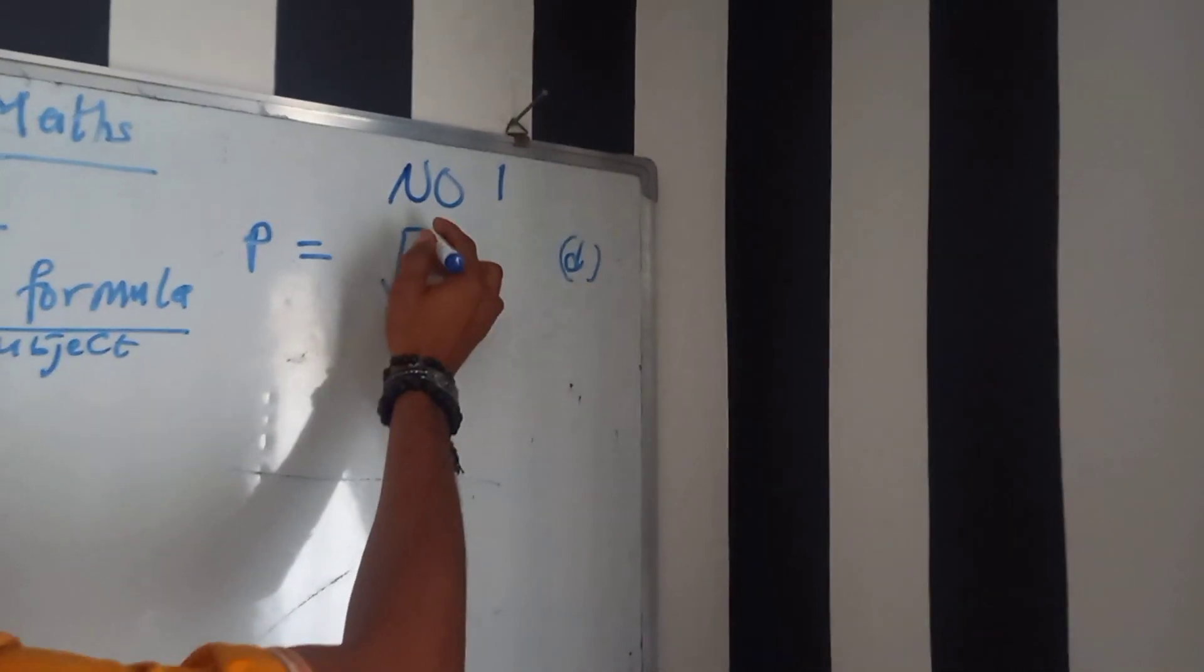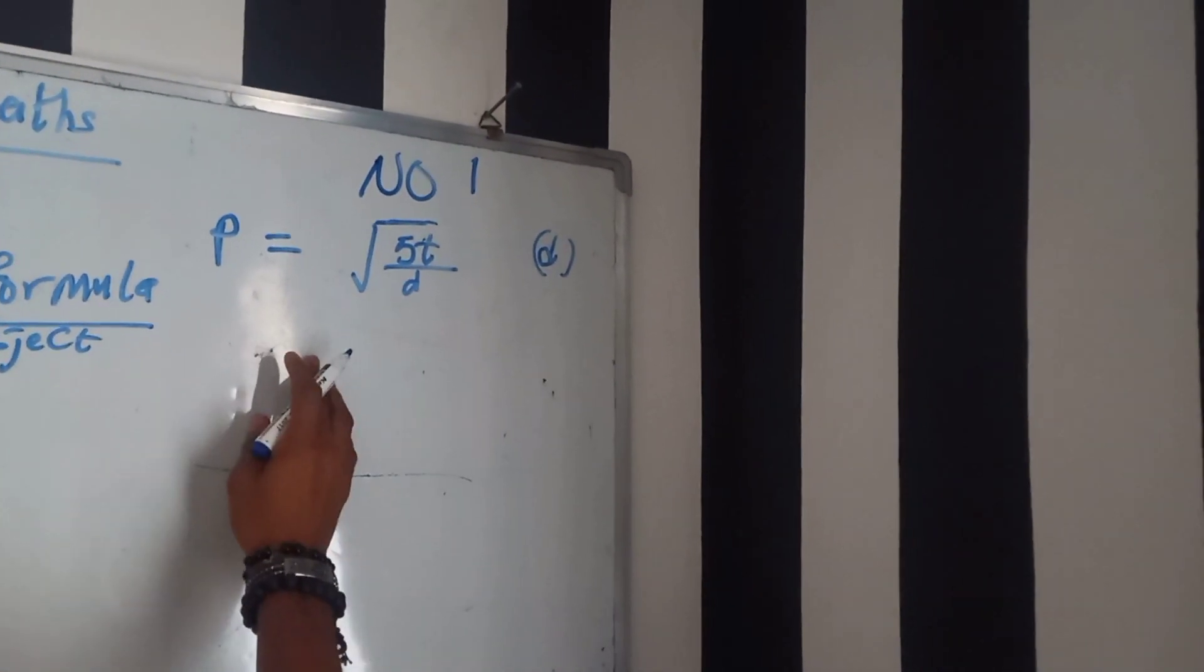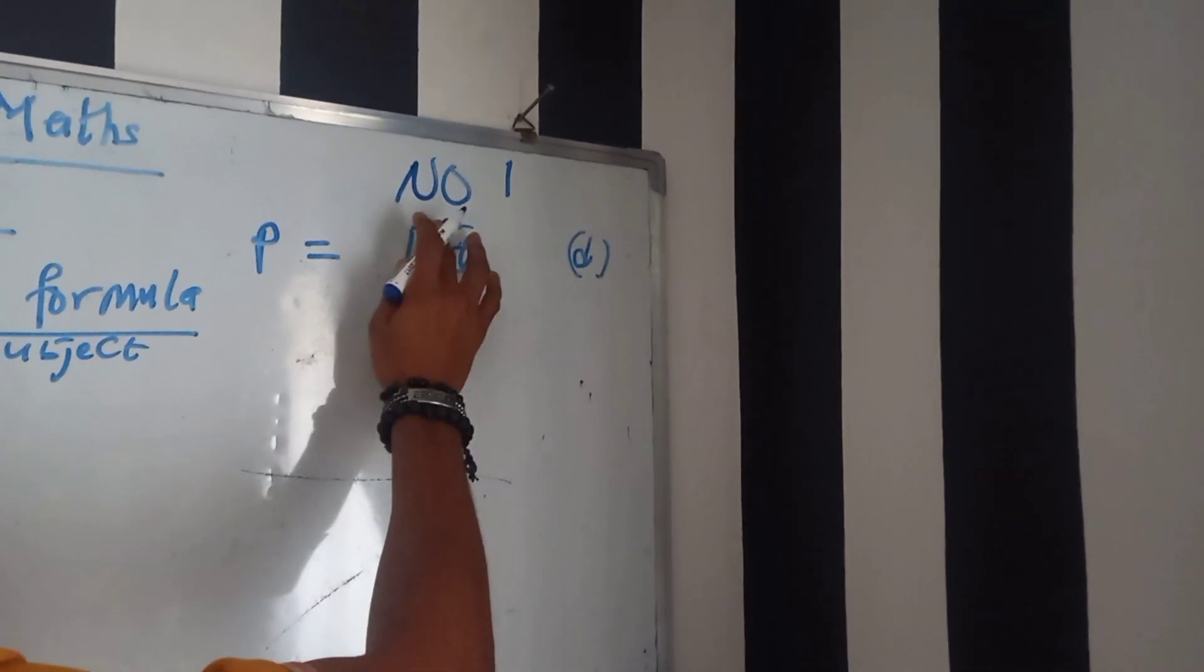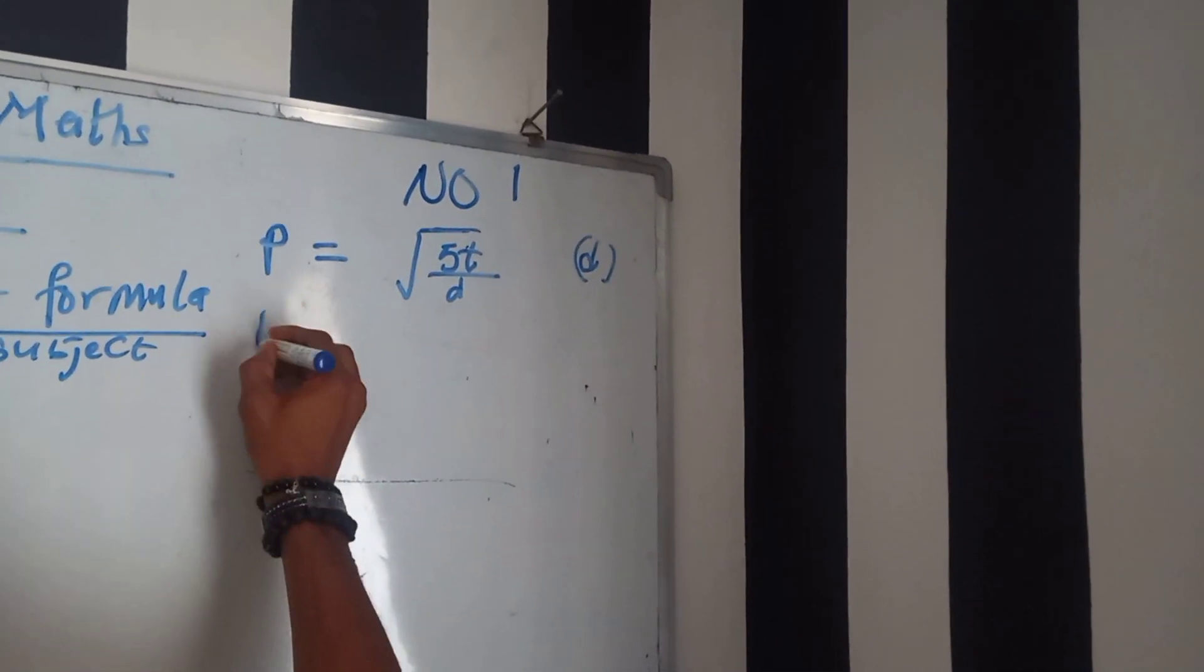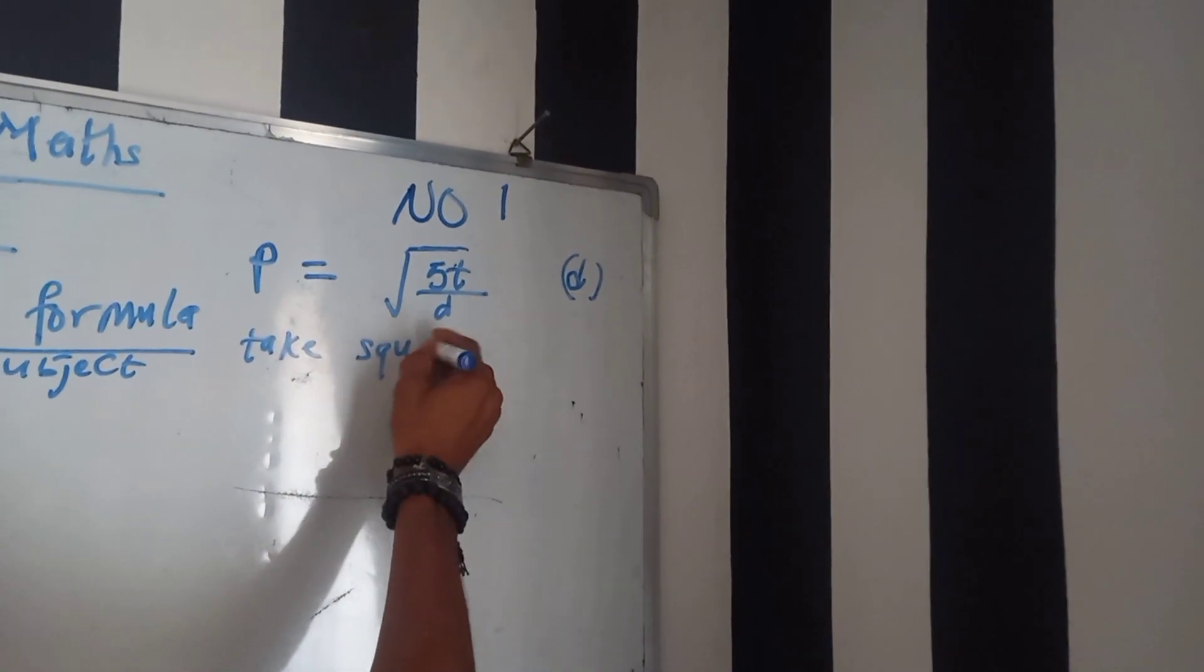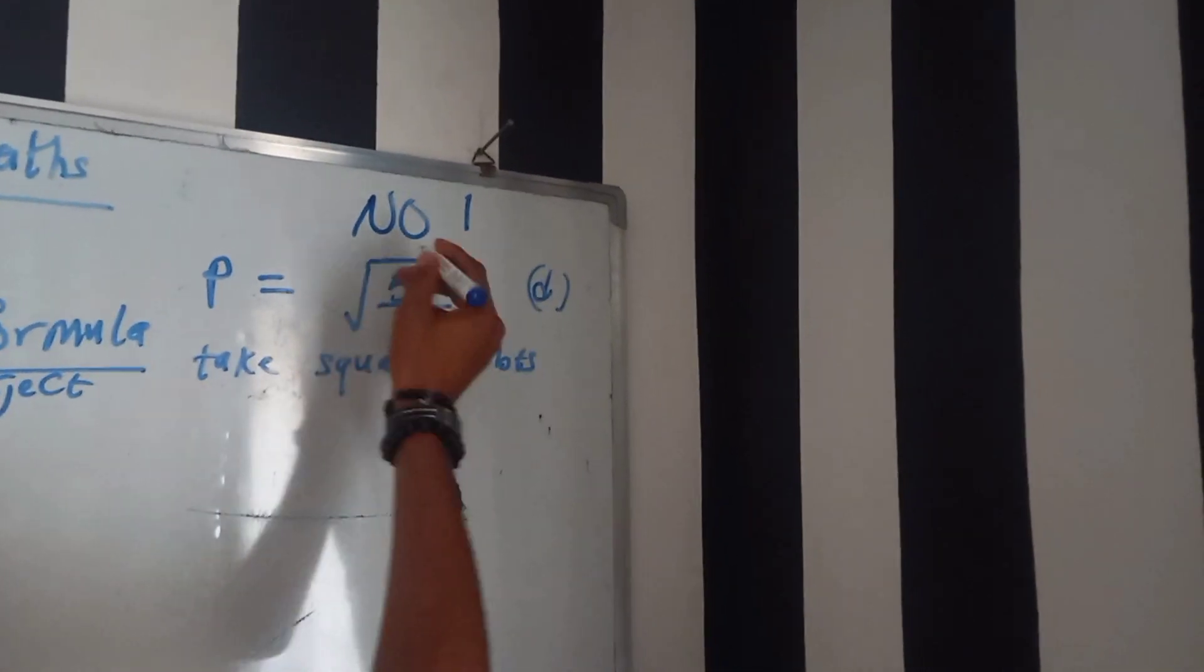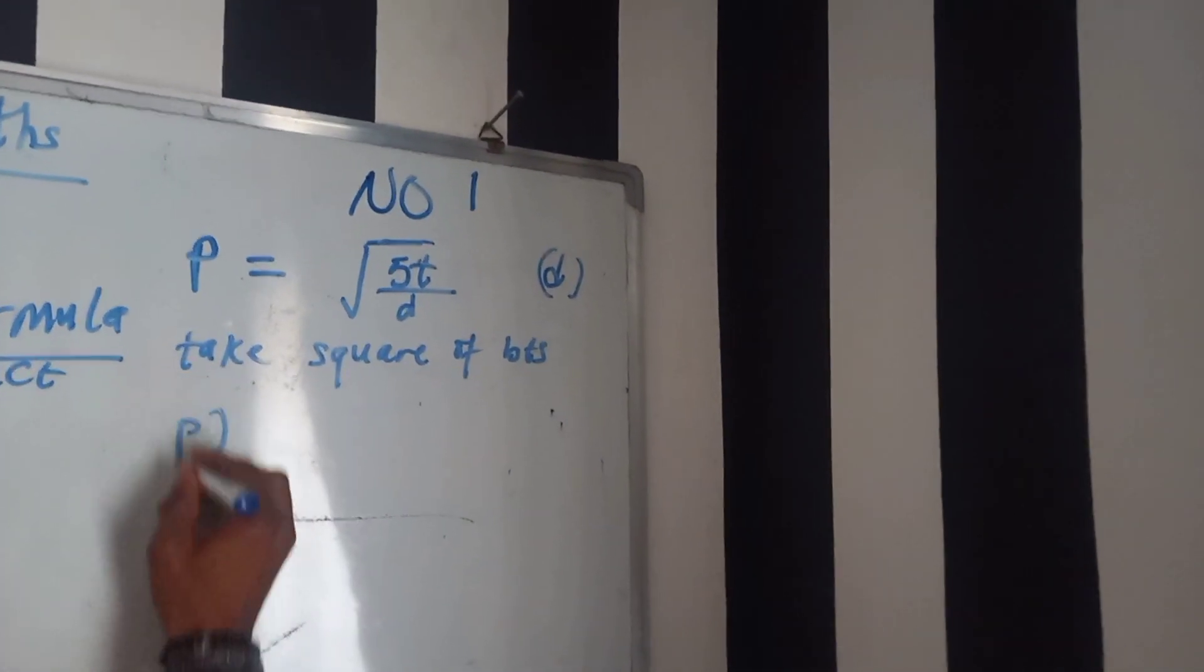Since you have a square root, I'll take square on both sides. So if I take square of both sides, definitely this root will go off. Take square of both sides, which means that P square...